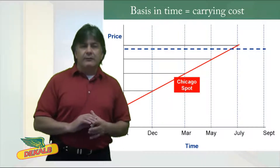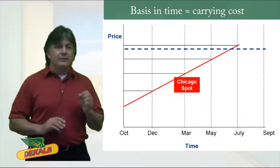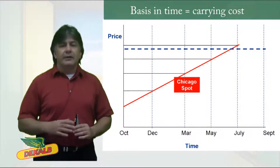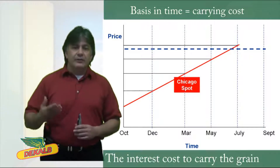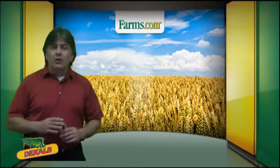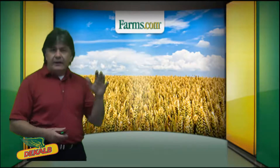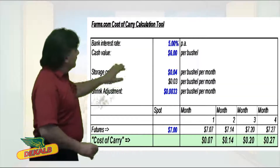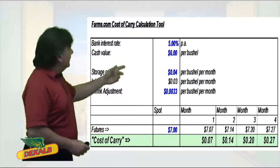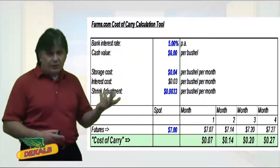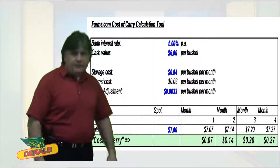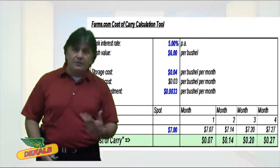In a well-functioning market, delivery point basis equals carrying cost. Carrying cost is mainly the interest cost to carry the grain forward — to store it — and should also account for shrink. Basis rises as that carrying cost rises. This is a quick calculation tool for cost to carry. If we add an interest rate of 5% and storage costs of 4 cents per month including some shrink, we arrive at about 7 cents per bushel cost per month.